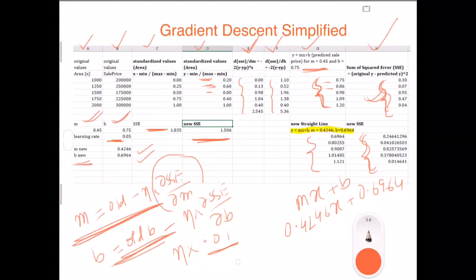Also if you see, this will change because now my predicted price has changed. So my calculation will change again and I will get a new value of M and B. I will just keep repeating, do the same thing over and over again.